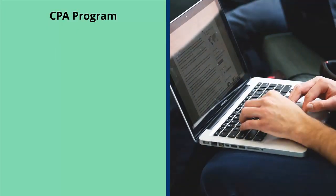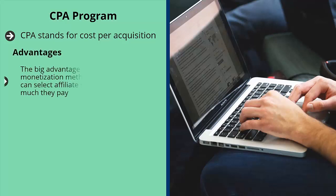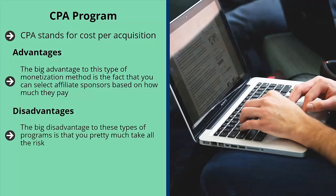Amazon is also quite stingy on certain product types — if your niche fits low-commission products, you won't make as much. CPA stands for Cost Per Acquisition. You join an affiliate program, get a link to products or services, show the ads on your website, and when people click and buy, you earn a commission. A big advantage is that you can select affiliate sponsors based on how much they pay — it can get very lucrative. For example, gold IRA affiliate programs can pay thousands of dollars per sale.